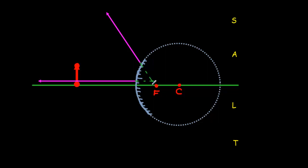So the head of the arrow, which we could think of as the candle flame, will be located right here. And the tail, we go back to the principal axis. There's my image.